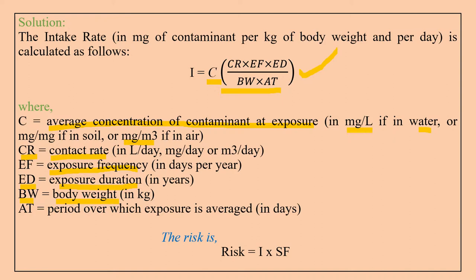For an adult we use 70 kg body weight; if it is a child we use 15 kg. The averaging period — average lifetime of an adult is considered 70 years.